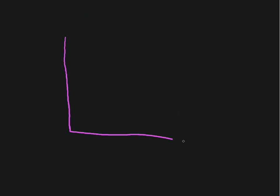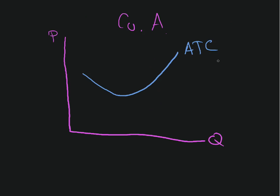Let's complicate this one more time and add in everything — costs and revenues — for our particular company. We'll draw the average total cost line and also the marginal revenue line as a straight horizontal line. This represents the price per unit the company receives.